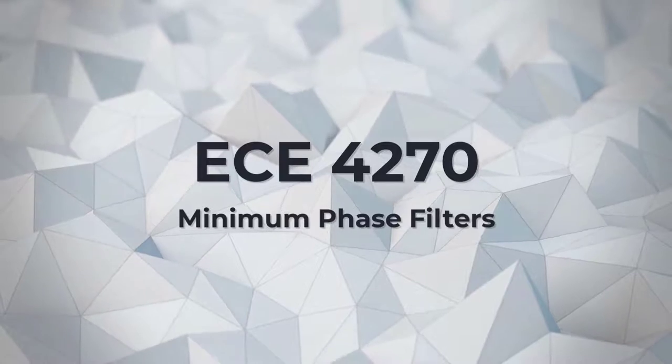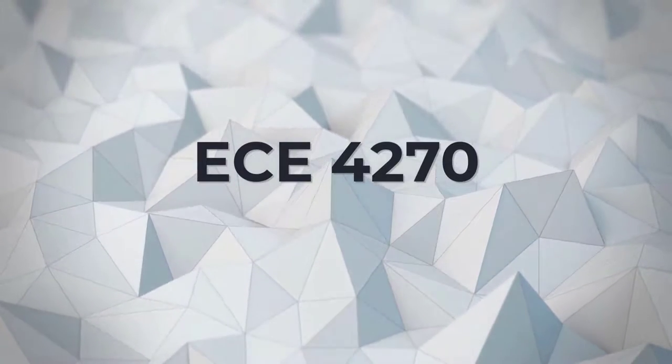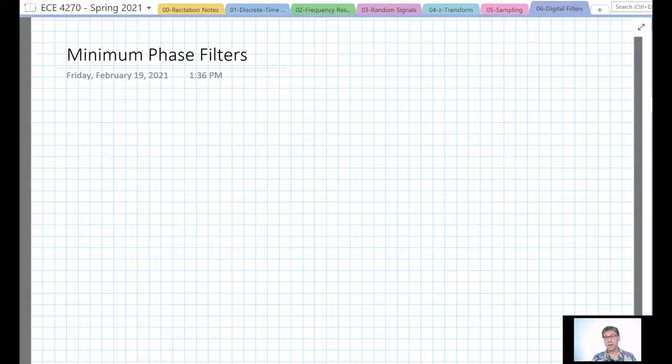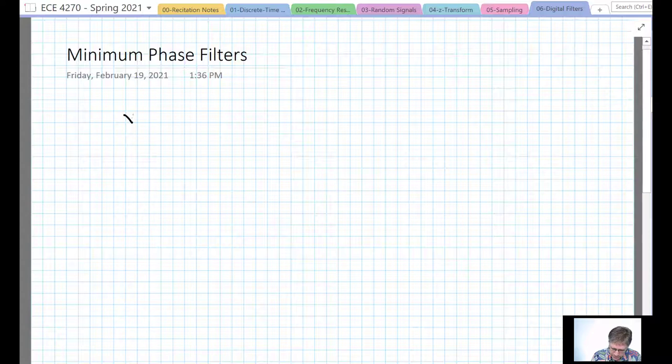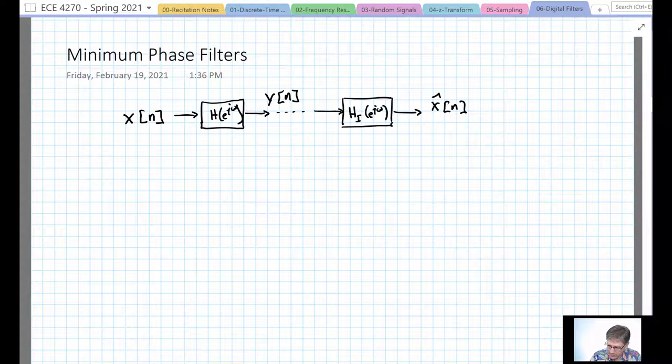Hello, so today we're going to lead off by bringing up a situation that happens frequently. Suppose we have a filter and it's filtered some signal, and we would like to undo that filter's effects. In the frequency domain, this is fairly straightforward. Let me lay out the situation here. So we have X, it's input into some filter H, we get out Y. We would like to take that Y and put it into another filter H_I for inverse and get out X hat, which we would like this to be equal to X.